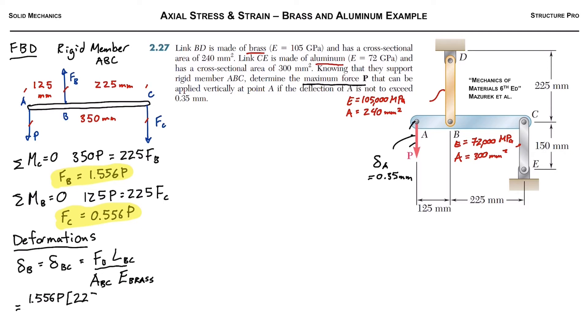My bad, we're actually talking about BD here, the brass link. Okay, plugging in, 1.556P, 225 millimeters, divided by 240 millimeters squared, and the 105 MPa, gives you 13.9 times 10 to the negative 6P. So it's quite a small number, 10 to the negative 6. I use the E notation for that.